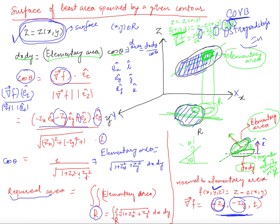The elementary surface area equals dxdy / cos(theta). So the required total area is the double integral over region R of sqrt(1 + z_x² + z_y²) dxdy.